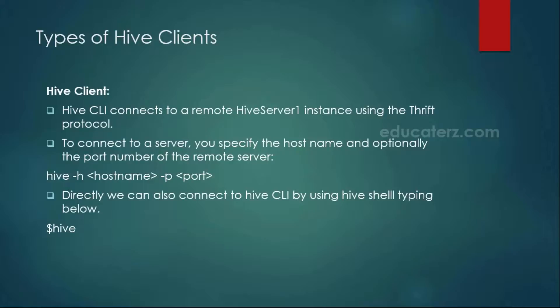To connect to the Hive client, just open your terminal in the Cloudera Quickstart VM, where all the ecosystem components like Hive and Pig are already installed. You need not do any installations. So directly log into your Hive client — just go into your Cloudera Quickstart VM and type 'hive'. That gets you connected to your Hive shell, where you can execute your Hive queries. The Hive client connects to the HiveServer 1 instance. If you want to specify host names and port numbers, you can use 'hive -h' for the host name and '-p' for the port. Otherwise, directly type 'hive' and it works well.